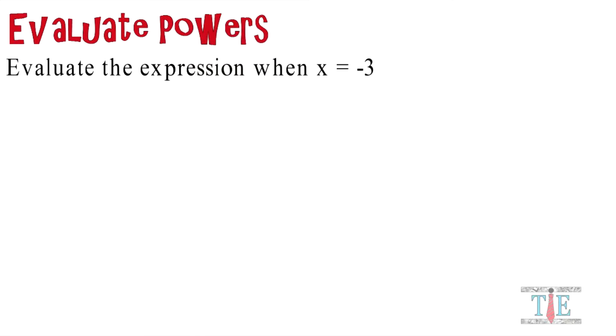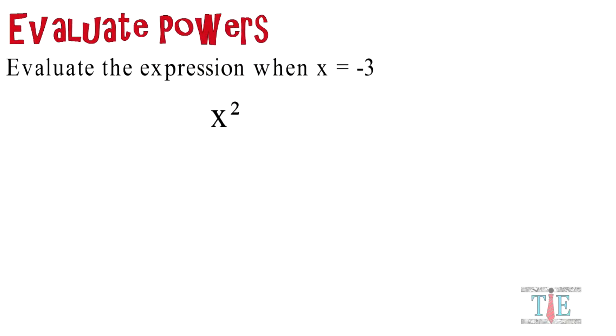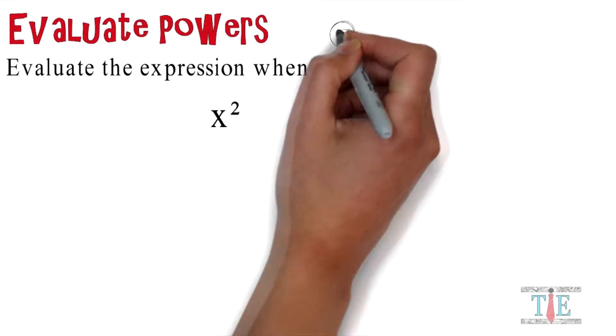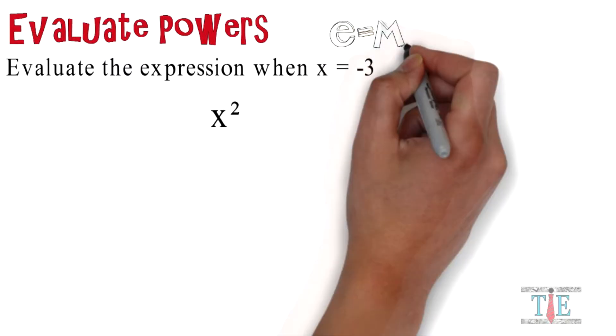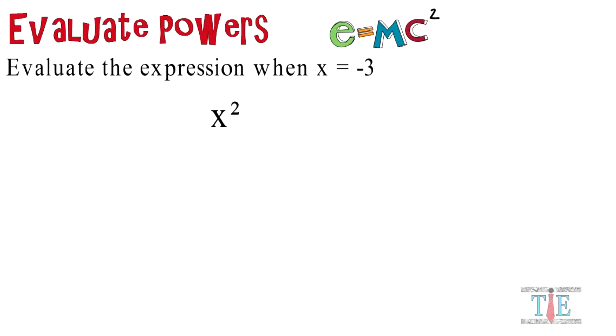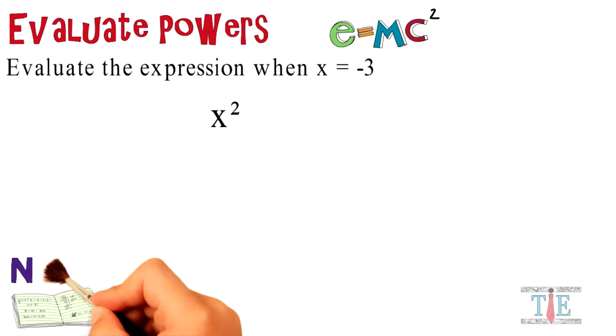Evaluate the expression when x equals negative 3 and you're given x squared. Take a second and try to figure this out for yourself. If you get stuck, some notes are provided below.